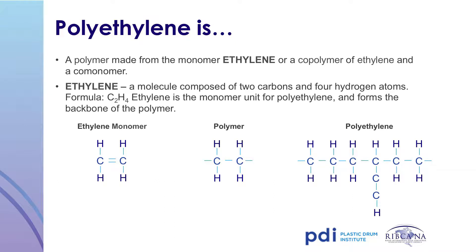What is ethylene? The ethylene chemical formula is C2H4, a simple monomer made from a multitude of sources. Ethylene can be derived from natural gas liquids or refining.